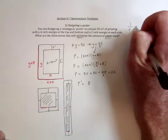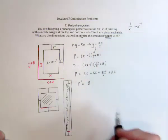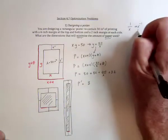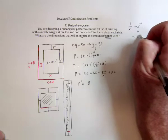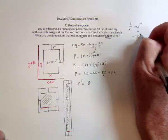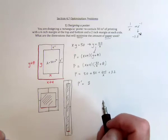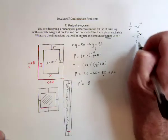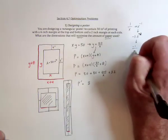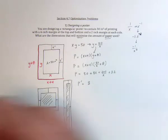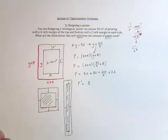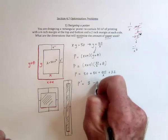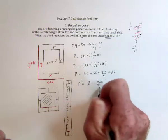With 1 over x, you can rewrite it as x to the negative 1. And then take the derivative. So it's going to be negative, and then x to the negative 2. And then you could rewrite it as negative 1 over x squared. Or you could just skip all of this part and just remember the derivative for 1 over x is negative 1 over x squared. So this will be negative 200 over x squared.